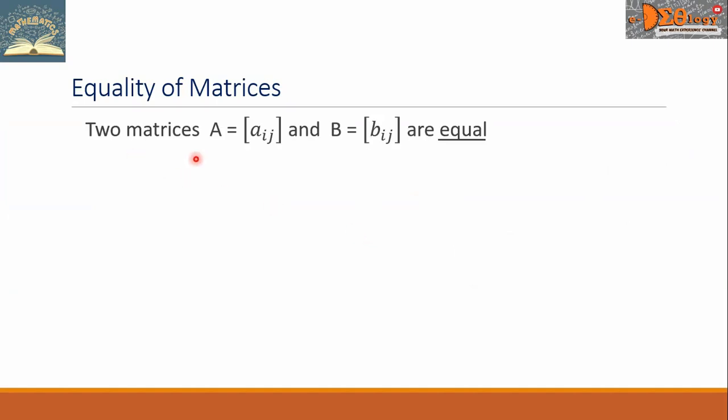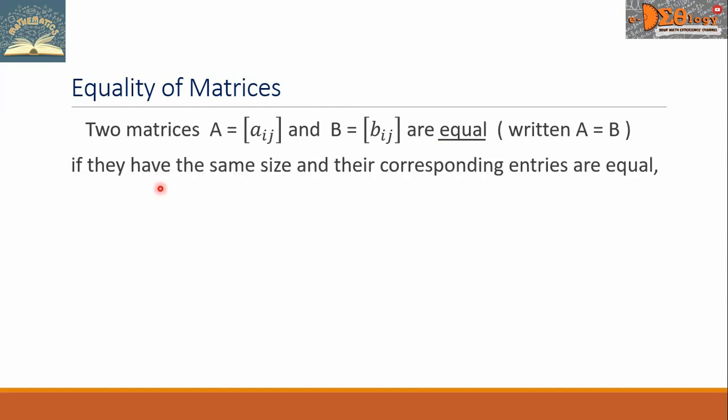Two matrices, capital A and capital B, are equal, written capital A equals capital B, if they have the same size and their corresponding entries are equal. That is, A sub IJ is equal to B sub IJ for all I and J.